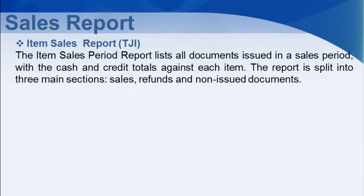Item Sales Report: The item sales period report lists all documents issued in a sales period with the cash and credit totals against each item. The report is split into three main sections: sales, refunds, and non-issue documents.